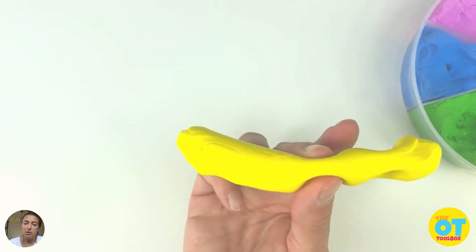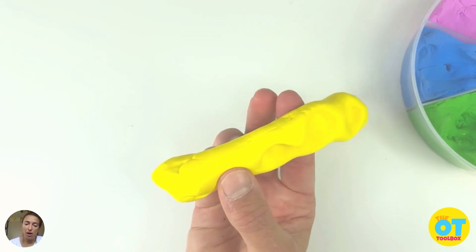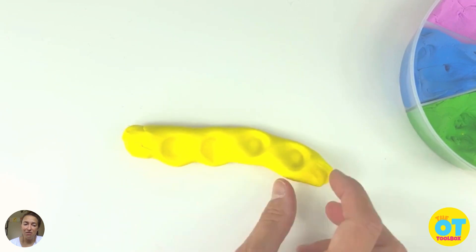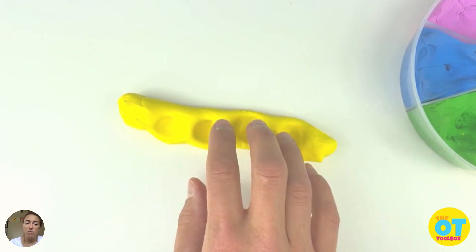We're going to pick it up and squeeze between the thumb and each fingertip. This is finger and thumb opposition and it takes a lot of fine motor control to manipulate that thread of dough within the hand.